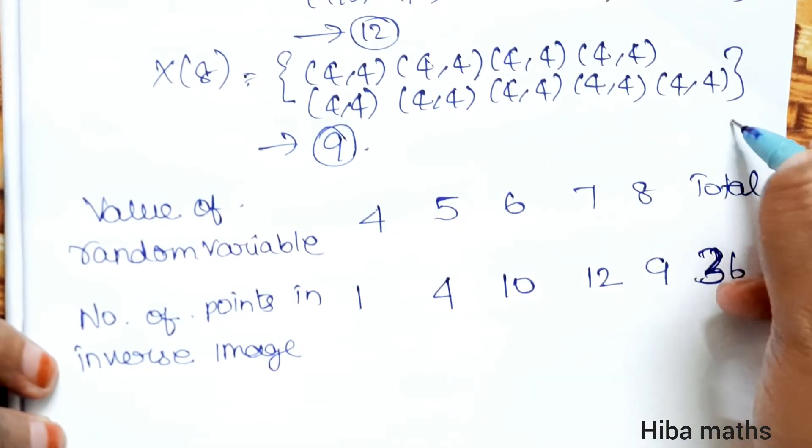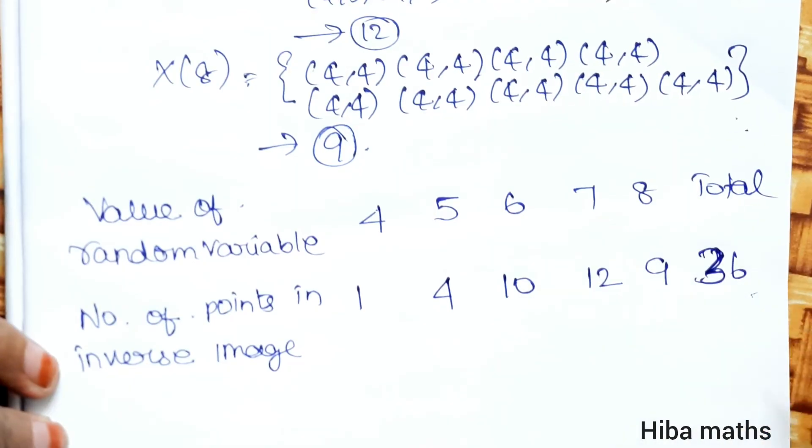So 6 faces thrown twice gives 6 times 6 equals 36, so we are correct. Thank you so much for watching.